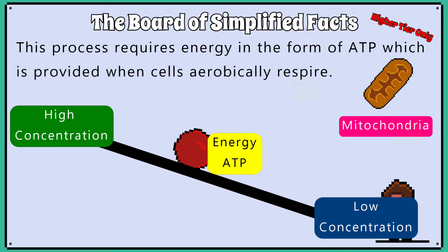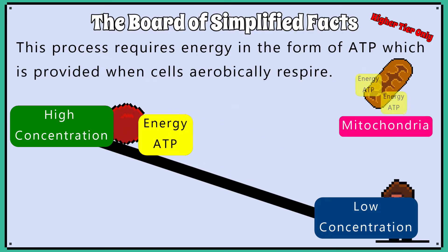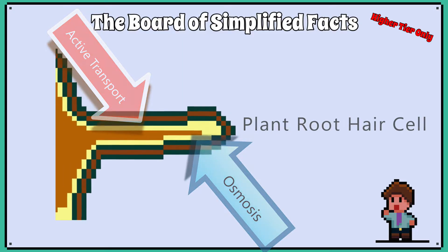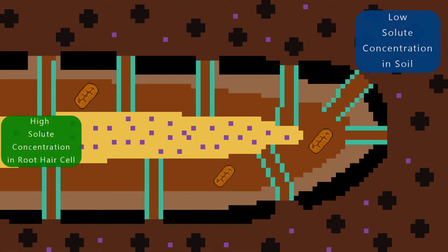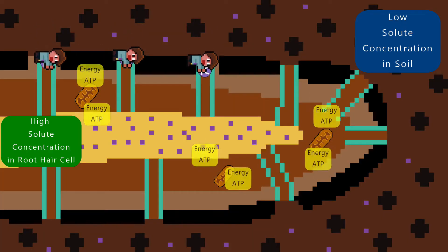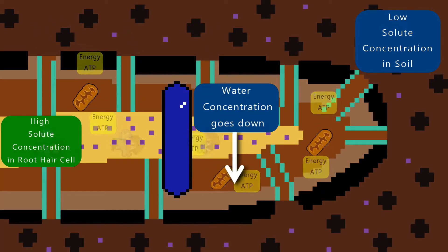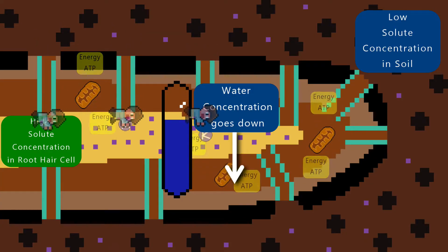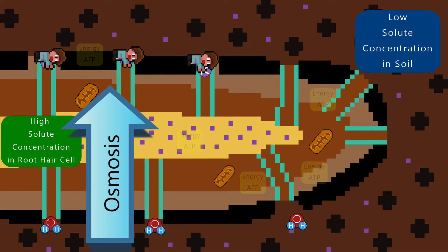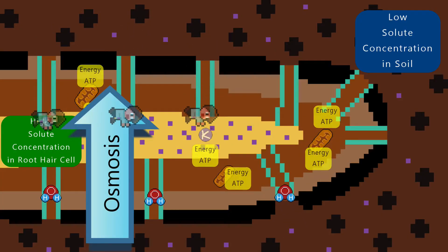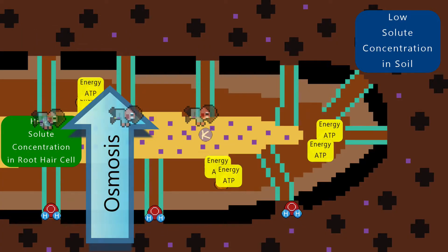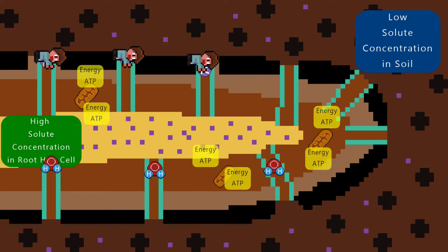which is provided when cells aerobically respire. A classic example in biology where active transport takes place is in the root hair cells of plants. They will absorb solutes, such as mineral ions, against the concentration gradient, with the goal being to lower the root hair cell water concentration. This ensures that the process of osmosis continues effectively by preventing equilibrium being reached between the soil and the root hair cells.